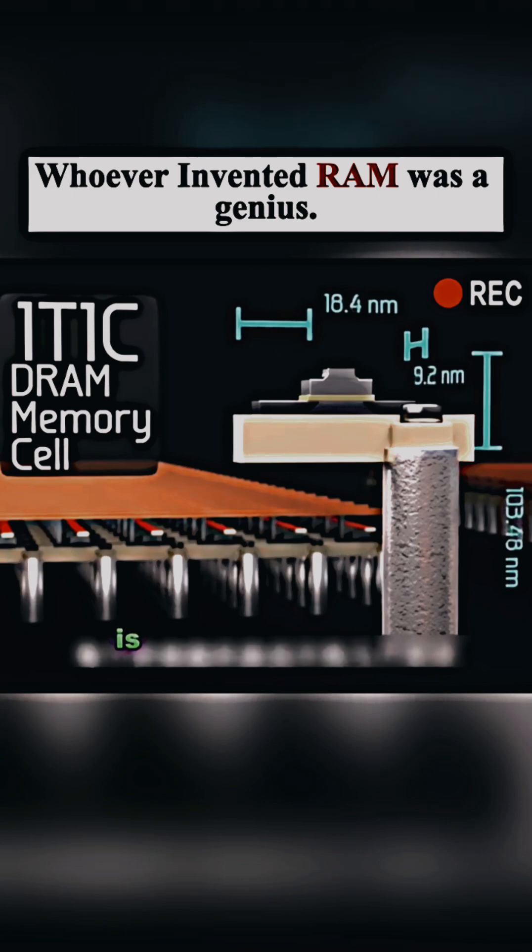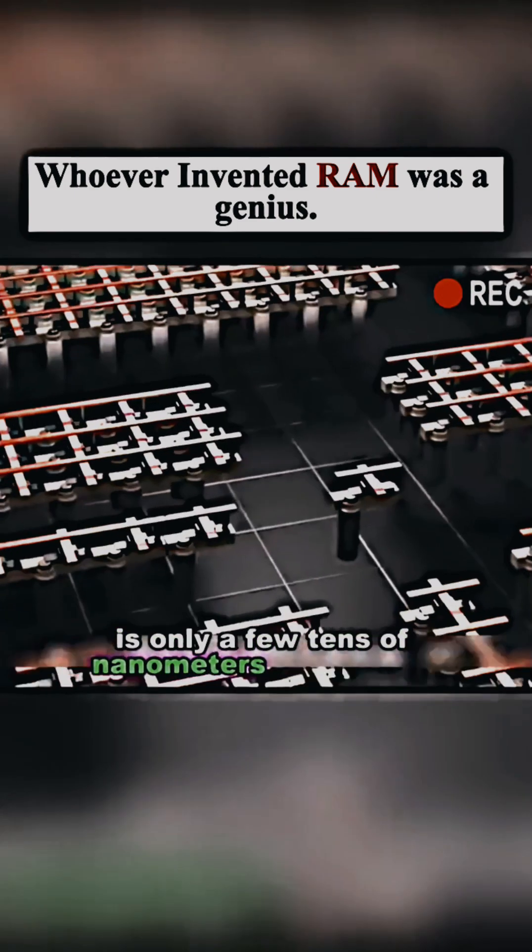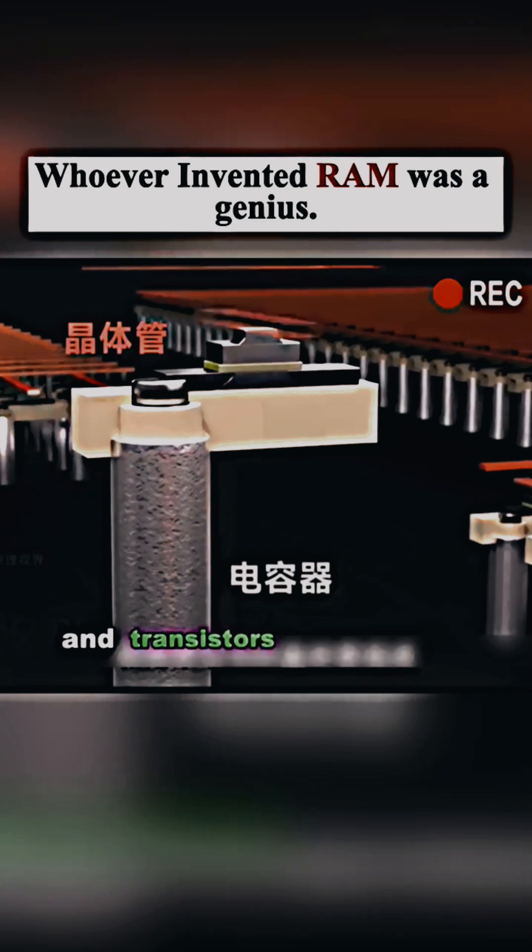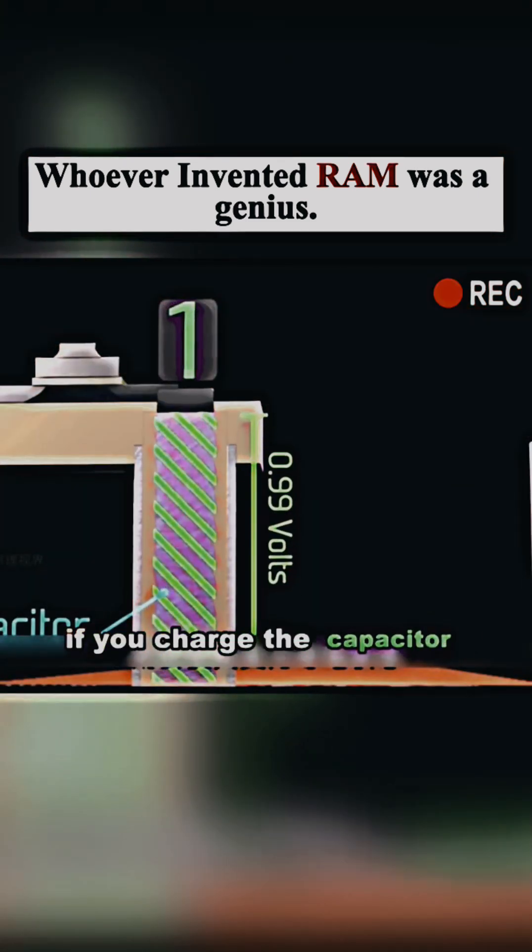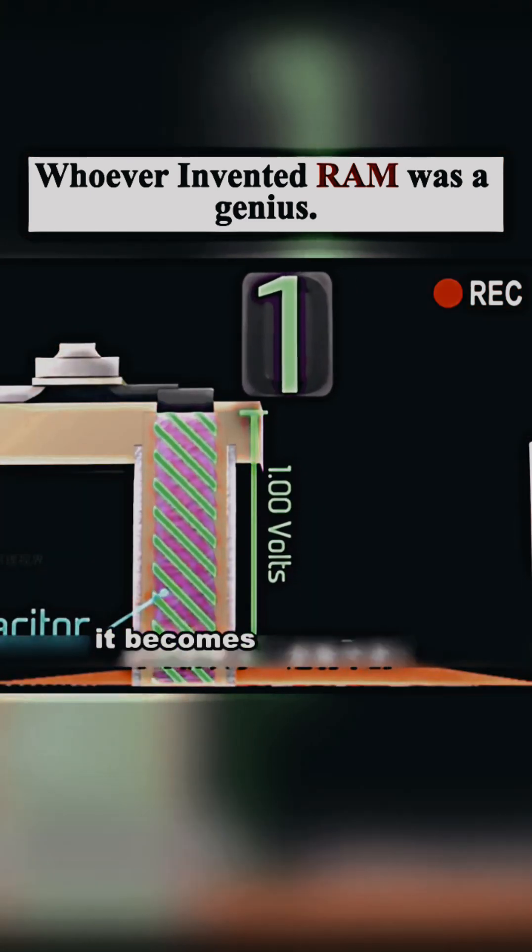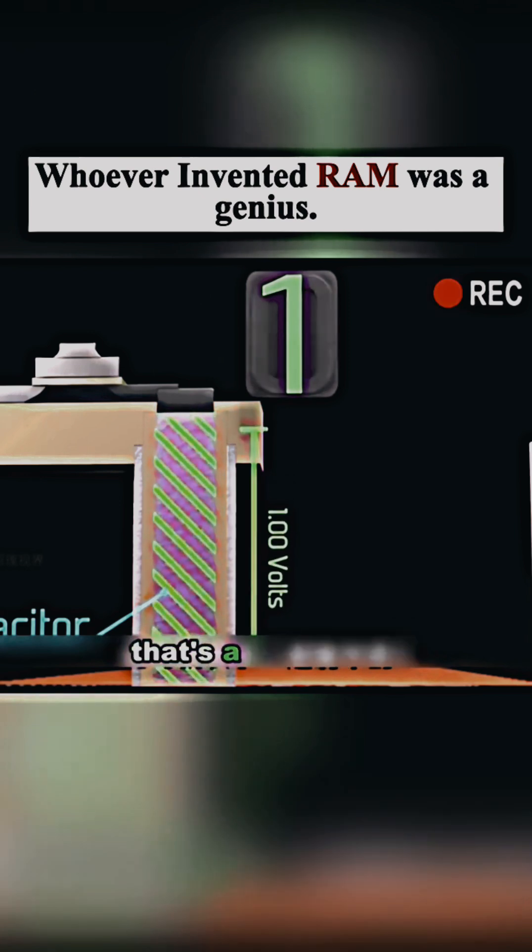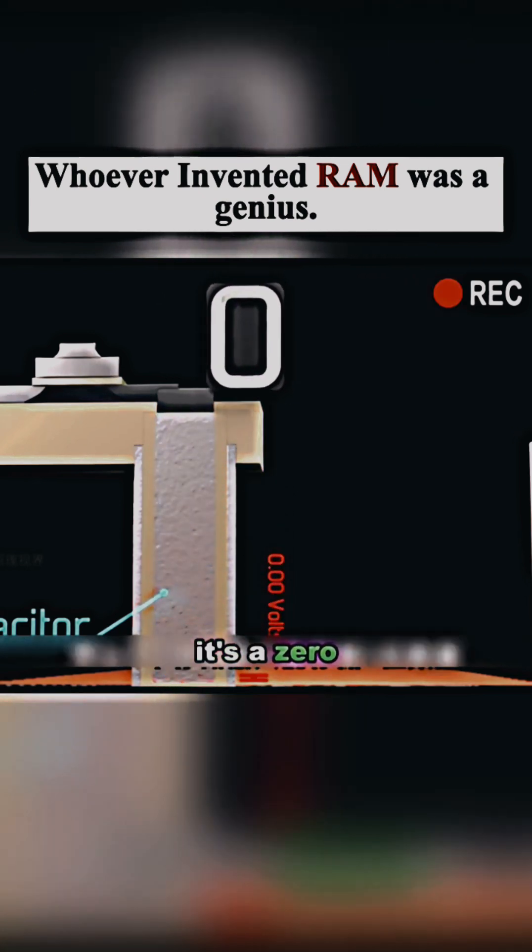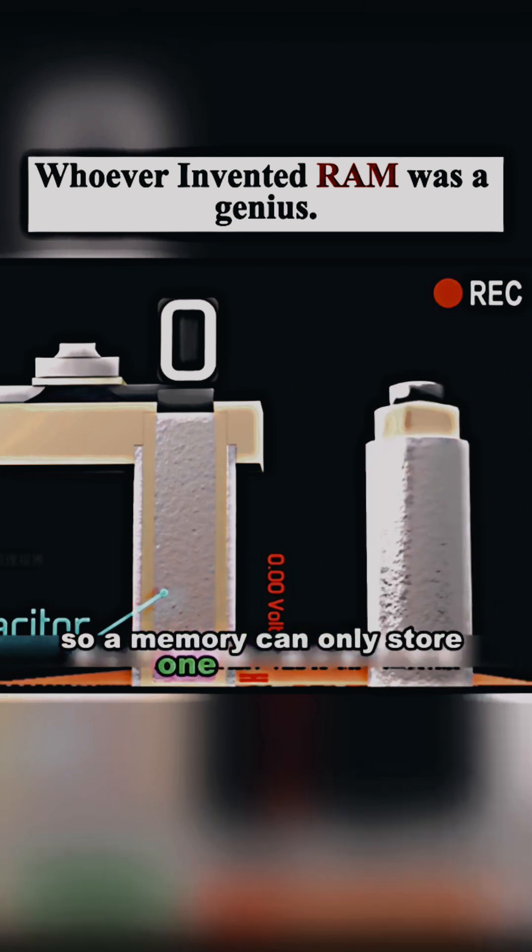Each memory is only a few tens of nanometers in diameter. It's made up of capacitors that store charge and transistors that access it. If you charge the capacitor to 1 volt, it becomes electrically conductive. That's a 1 in binary. If the capacitor has no charge, it's a 0. So a memory can only store one bit of data.